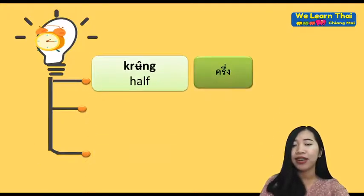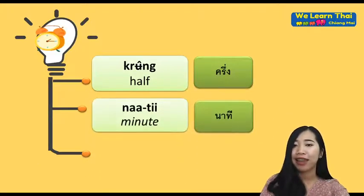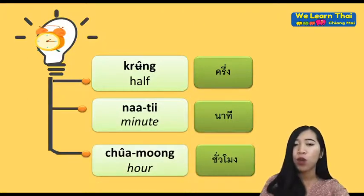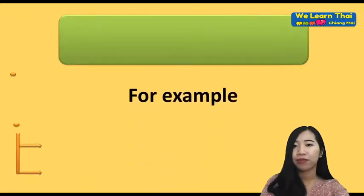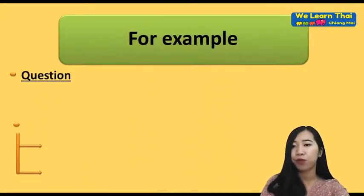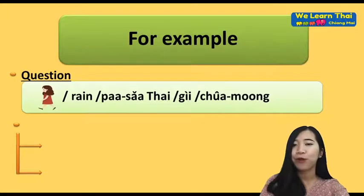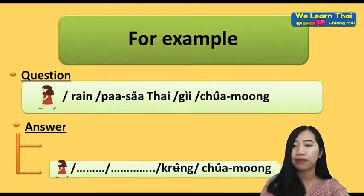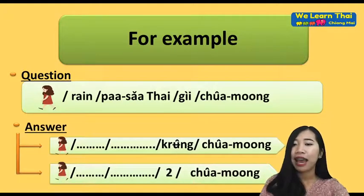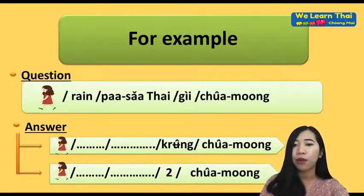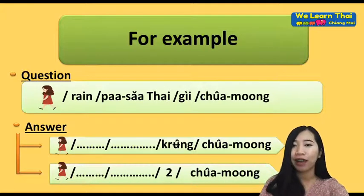ครึ่ง (khrueng) means 'half.' นาที (nathi) means 'minute.' ชั่วโมง (chua mong) means 'hour.' For example: คุณเรียนภาษาไทยกี่ชั่วโมงคะ — How many hours do you study Thai? ดิฉันเรียนภาษาไทยครึ่งชั่วโมงค่ะ — I study Thai for half an hour. Or: ดิฉันเรียนภาษาไทย 2 ชั่วโมงค่ะ — I study Thai for 2 hours.